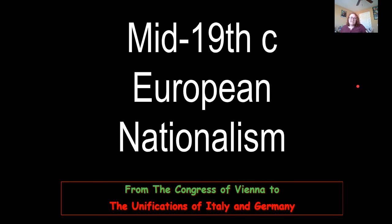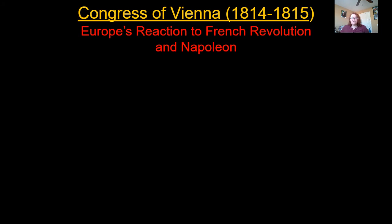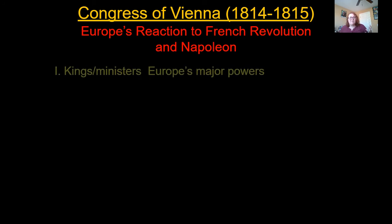So we're really going to look at what Europe looked like during this time. We're going to start with the Congress of Vienna, and then we're going to go all the way through to the unification of Italy and Germany. The Congress of Vienna happened in 1814 to 1815, and this was basically Europe's reaction to the French Revolution and Napoleon. At the end of Napoleon, he wanted to unite all of Europe under a French empire, which caused complete and utter chaos within each of the countries and monarchies, and people didn't like it.